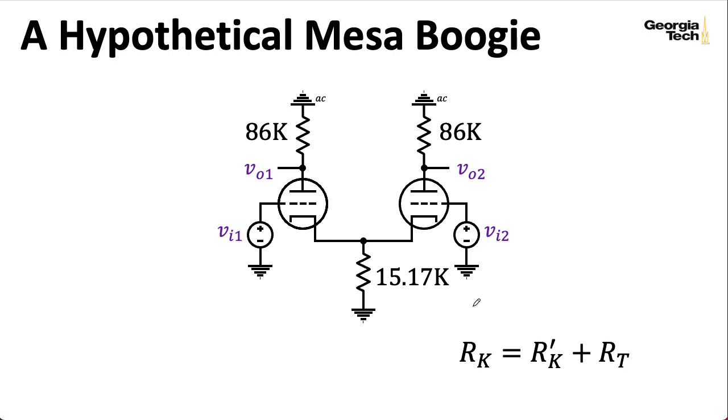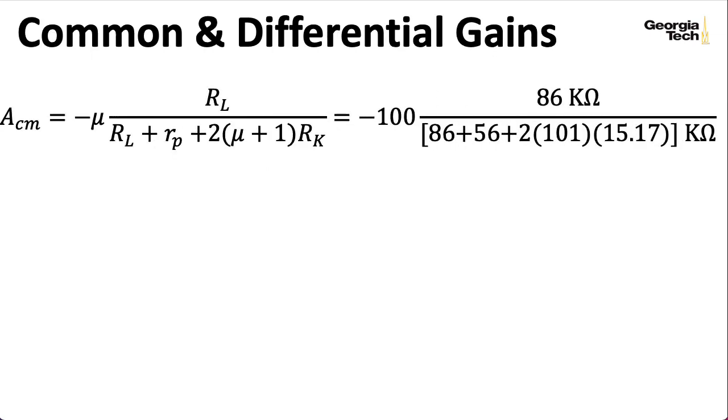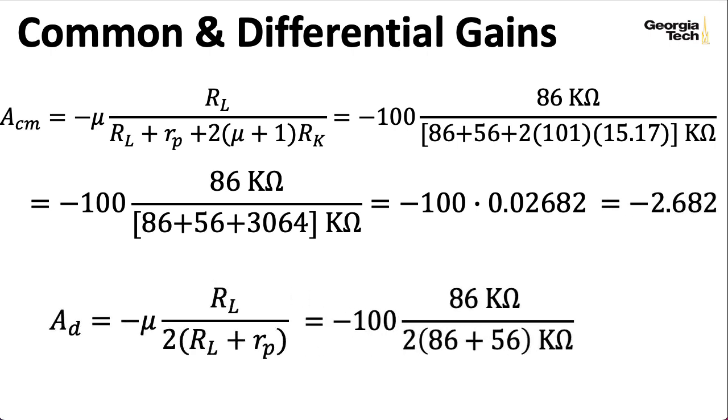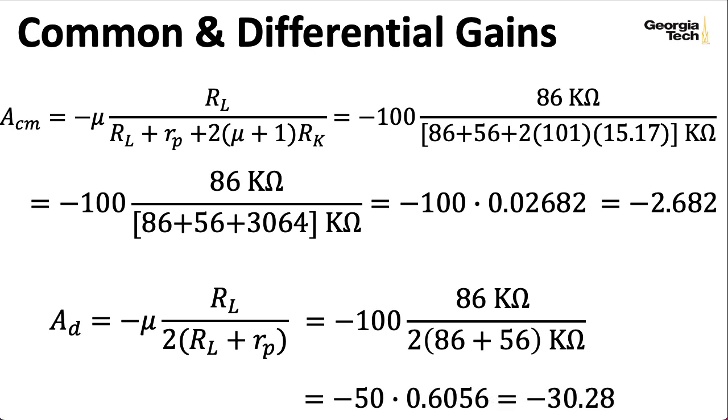And if we plug in these numbers into our formulas, we wind up with a common mode gain of minus 2.68 something, and a differential gain of minus 30.28. So our differential mode gain is a lot bigger than our common mode gain, which is what we want. Now, when I'm computing these, I like to leave mu separate and apply it at the last minute. That gives me a sense of what this ratio is doing. Similarly, over here, I like to take mu divided by 2 and leave it out here for a moment to get a sense of what this ratio is doing.